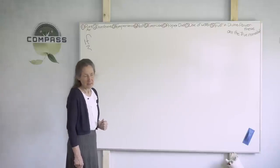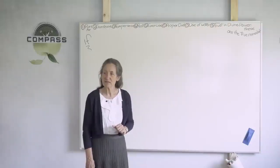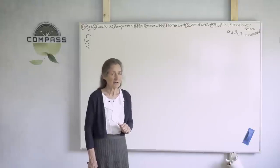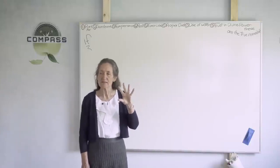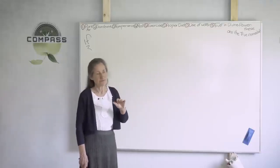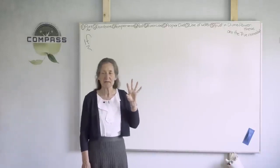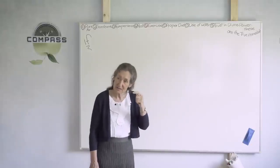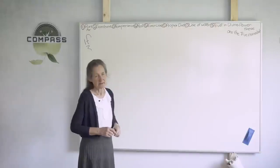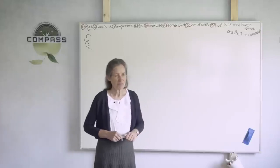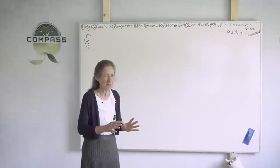Prve raziskave so bile storjene približno leta 1950 na podganah in odkrili so, da so bili časi sredi noči, ko so se oči podgan hitro premikale in obdobje po noči, ko oči se niso premikale sploh, ampak skoraj popolnoma mirne. Odkrili so tudi, da ko se oči hitro premikajo, možgani tudi hitro delujejo. Ko so bile oči mirne, so tudi možgani bili mirni.